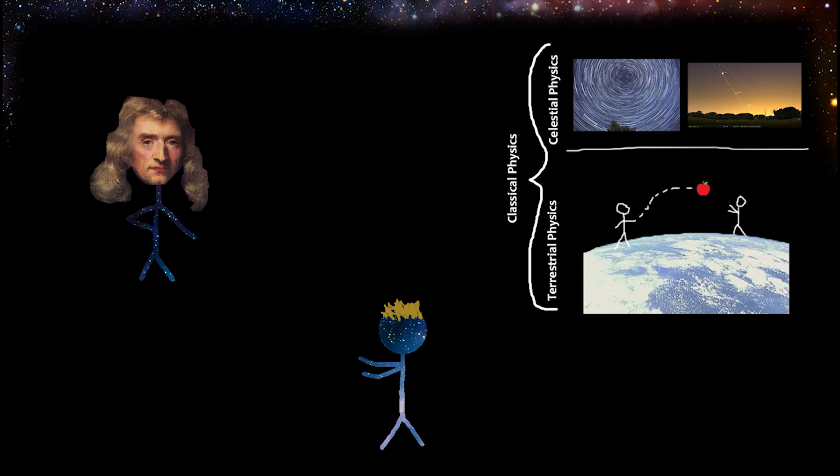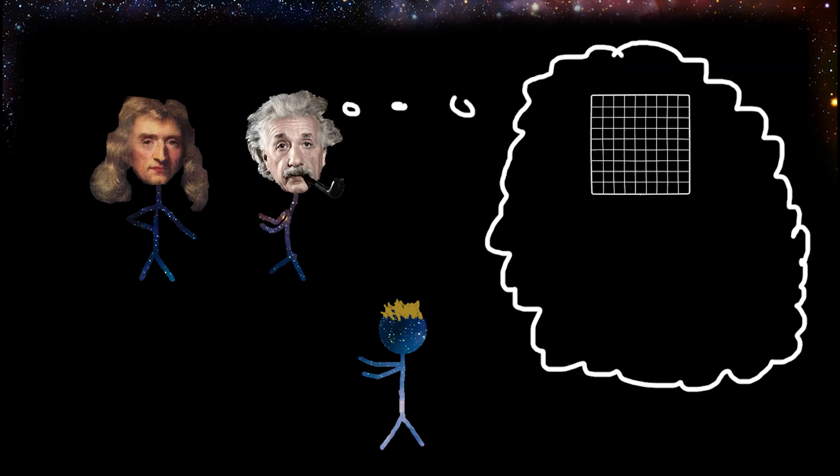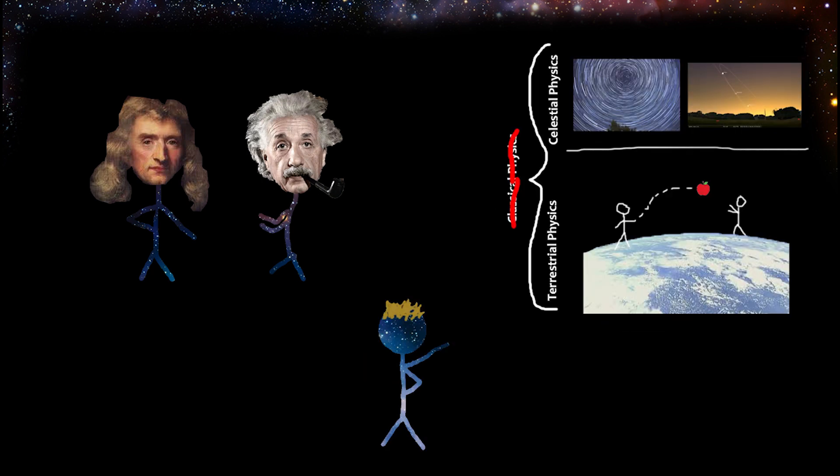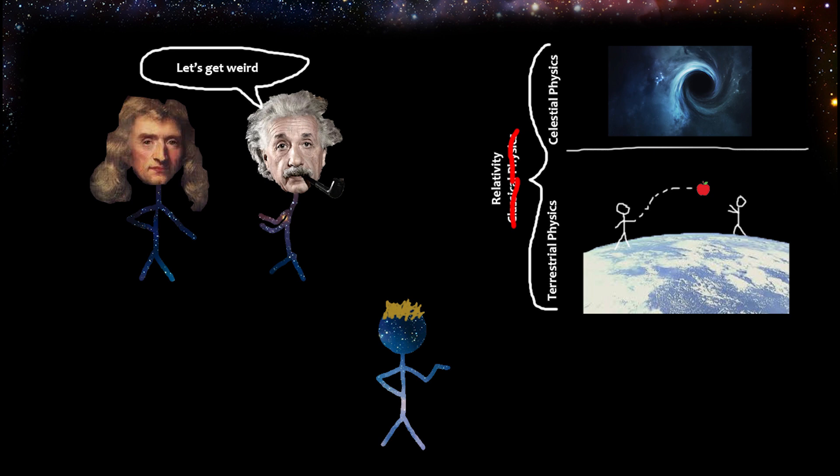Since then we've moved even further, with Einstein essentially coming along and thinking, well, what if space and time itself was bendy? And then it turned out it is, and now we've improved upon classical physics with relativity, which is cool because now the same theory can describe the path of the ball we're tossing and also predict the existence of black holes.